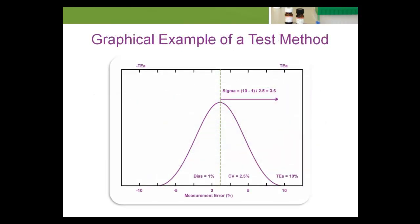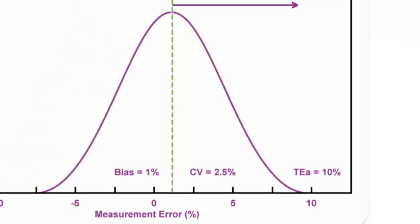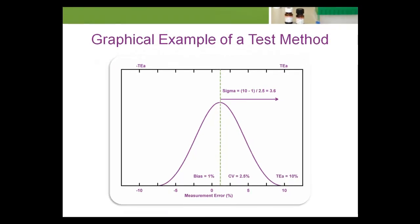The chart shows a graphical example of a test method with one percent bias, 2.5 percent coefficient of variation, and a specified allowable total error of 10 percent. In this case, the sigma value is 10 minus 1 divided by 2.5 equals 3.6. That is, 3.6 analytical SDs fit within the 10 percent quality specification.